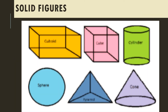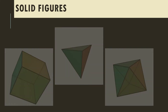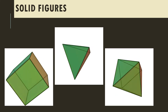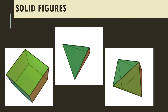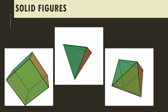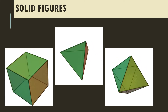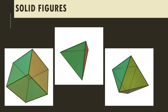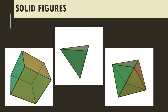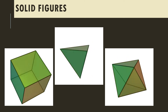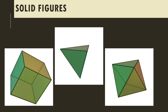Here are examples of solid figures: cuboid, cube, cylinder, sphere, pyramid, and cone. All of them take up space — they are three-dimensional objects with height, width, and length. In fact, almost all objects we can see in the real world are 3D objects: a cell phone, mouse, laptop, notebook — they all take up space.